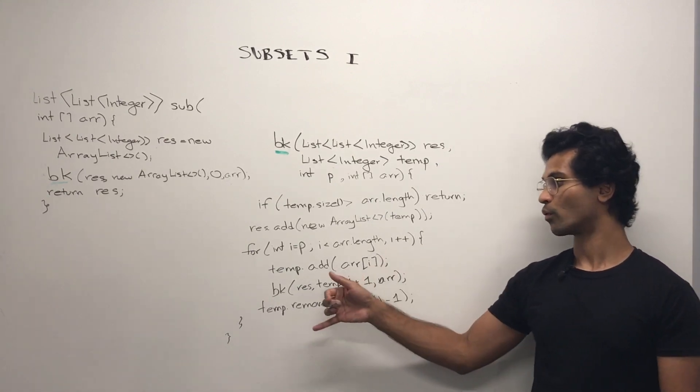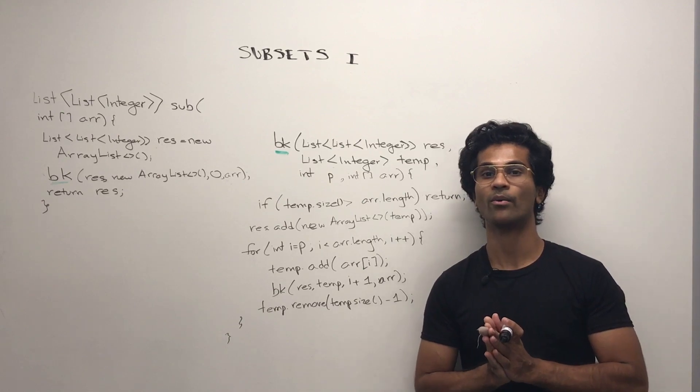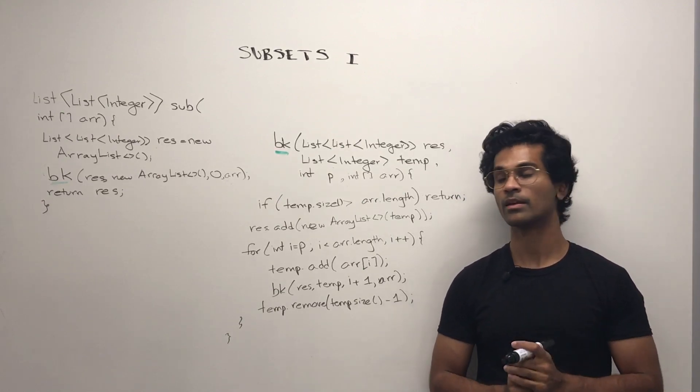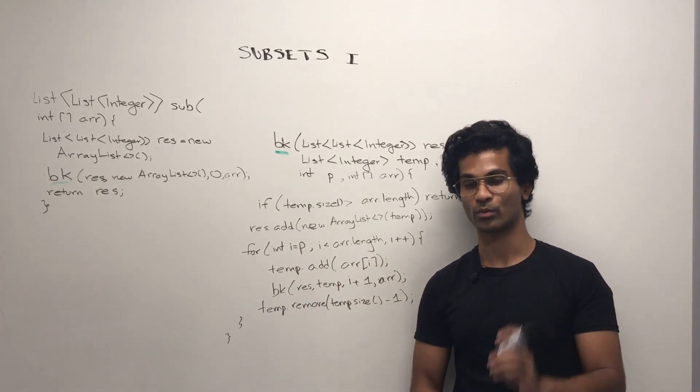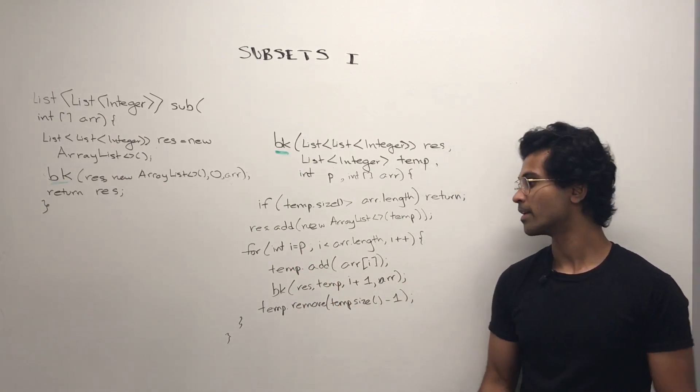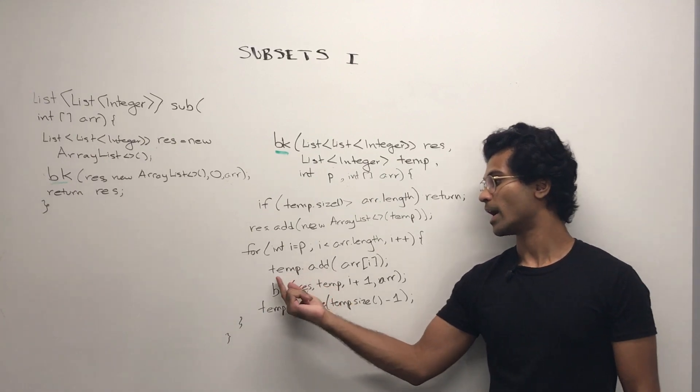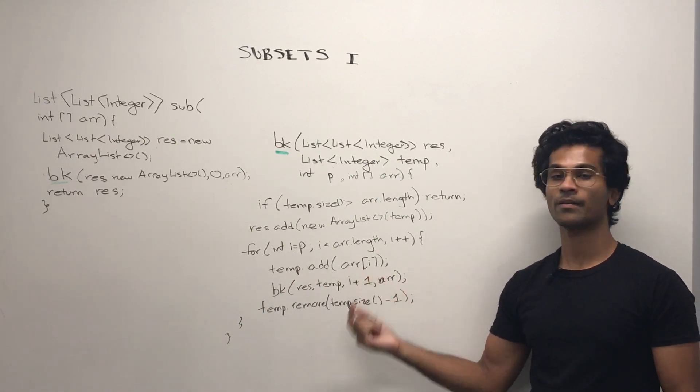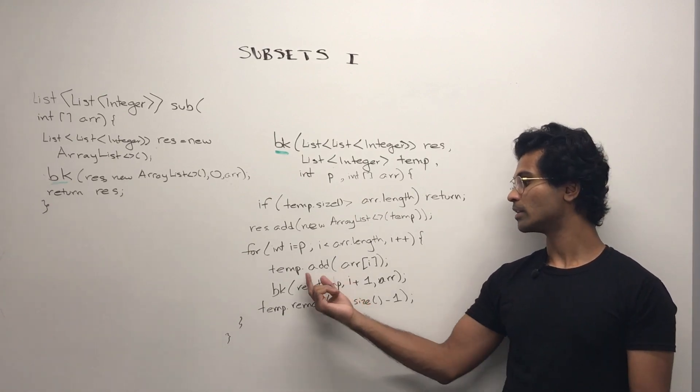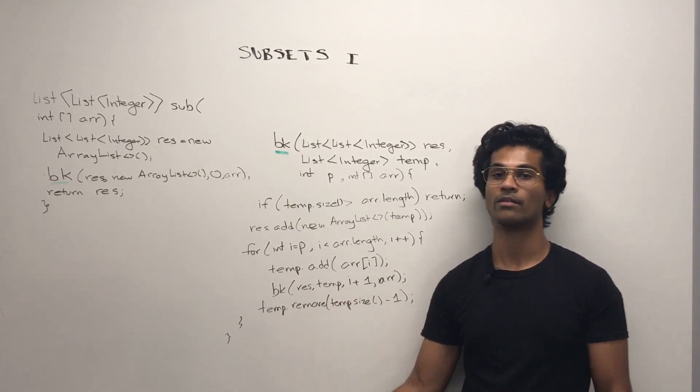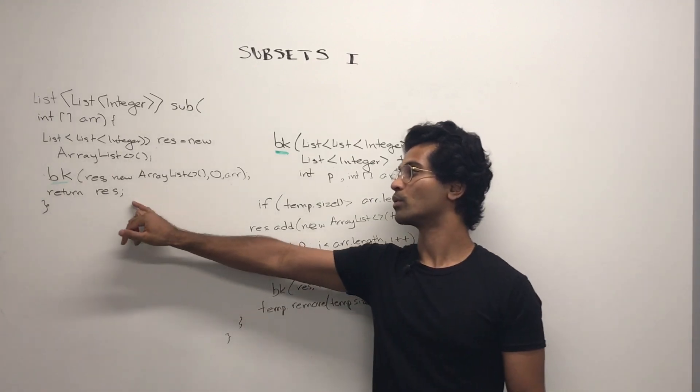Finally, we get to our for loop, which is going to be how we begin branching. So i is initialized to p. This represents the actual pointer we're starting at for our branch. Then we're going to add our arr of i into our temporary list and recursively call. Ultimately, once this returns, we're going to remove it. And finally, we return our result.